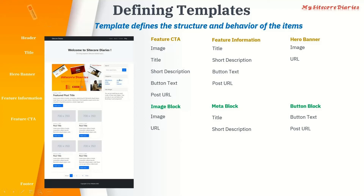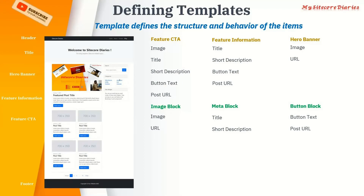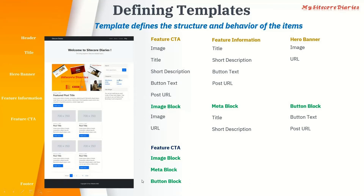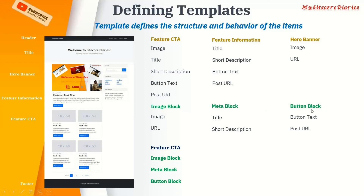Sitecore supports multiple inheritance — one template can have multiple templates inherited. If you consider feature CTA and inherit the image block, that gives you image and URL. The meta block gives you title and short description. The button block gives you button text and post URL. So this is called inheritance: your main template inherits these three base templates, covering everything needed for feature CTA.